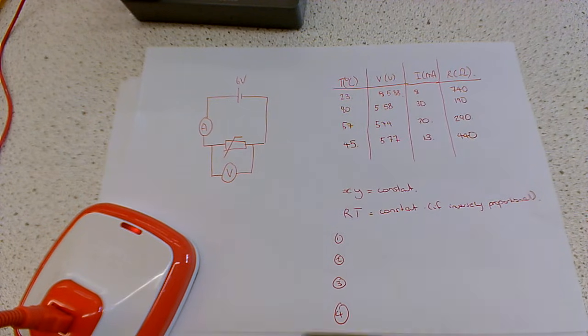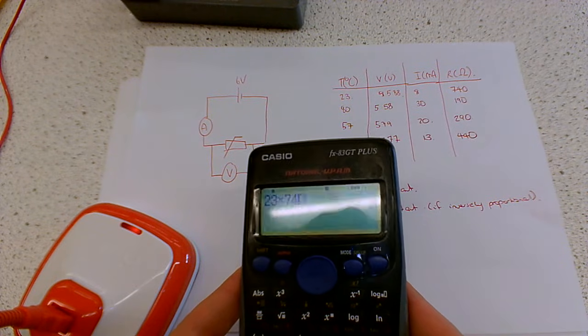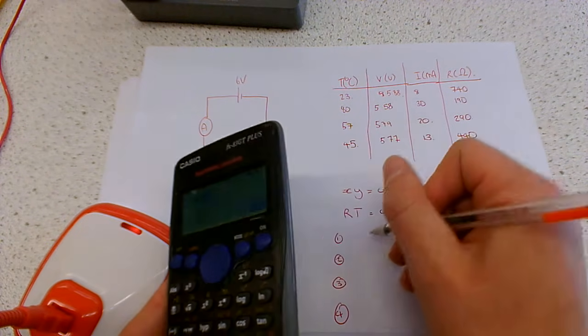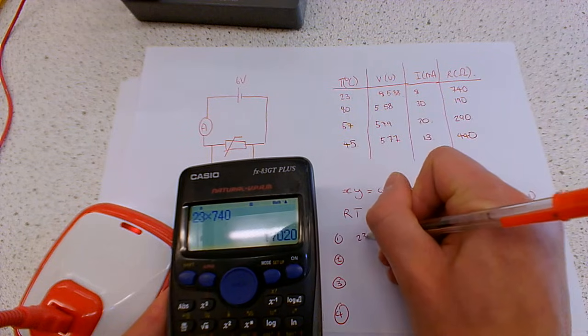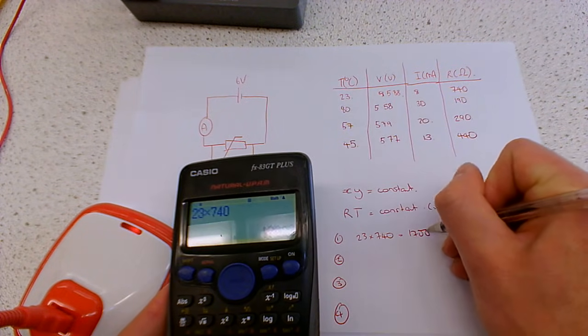So all I'm going to do is multiply them together. We're going to do twenty-three times seven hundred and forty. I missed the seven there. So that's about, let's make sure I show my working. So that's about seventeen hundred.